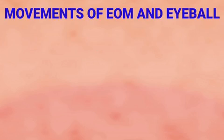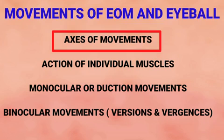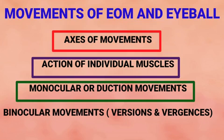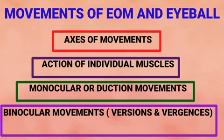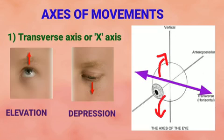Coming to the most important part — the movements of the eyeball. We will study movements under the following headings: the axes of movements, the action of individual muscles, monocular eye movements or ductions, and binocular eye movements — versions and vergences. There are three axes of movement of the eyeball. The transverse axis or x-axis produces elevation and depression of the eyeball.